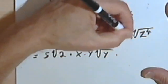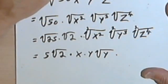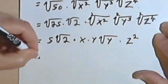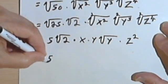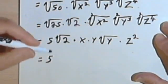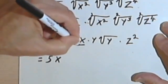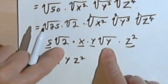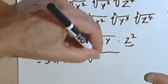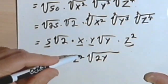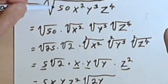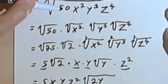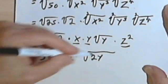For the square root of z to the fourth: dividing 2 into 4 gives 2 with no remainder, so this becomes z squared. Now I write the final answer in standard form: starting with my number 5, then all variables outside the radical — 5xy z squared — and I still have the square root of 2 and the square root of y, which I can multiply together to get the square root of 2y. So the final answer is 5xyz squared times the square root of 2y. You don't have to write every step — whatever you can do in your head safely, go ahead.